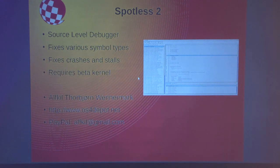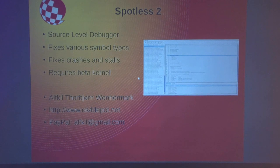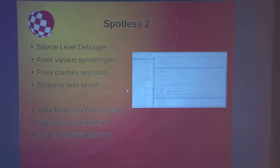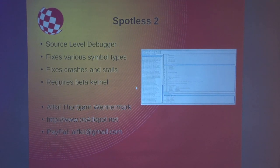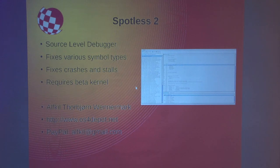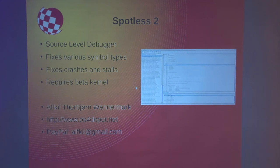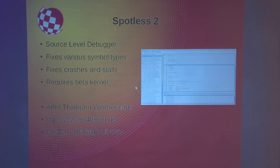Also a plug for Spotless 2 — Elfkill has a new Spotless 2, a source level debugger. He's been hacking at it and he's on the ExecSG team, so whenever he needs changes to the kernel or fixes we try to make it happen. It says 'requires beta kernel' — so I'm telling you to go get Spotless 2, but you can't run it yet. We've got to get the new kernel out there. The left side is your source modules, the right side is the source code itself, and the bottom is registers and all that. Elfkill's been working hard on this and has a PayPal address if anyone wants to help. It's on OS4 Depot.